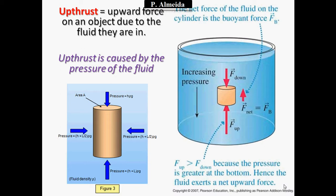When I get an object in a fluid, there's going to be pressure all around the object. The pressure on the sides is exactly the same. Now, because the fluid has some length, one part of the fluid — the top — is going to be at a different depth than the bottom. We have learned that pressure increases with depth. You can think about it in terms of the number of particles: you have more particles at higher depths and therefore pressure is higher.